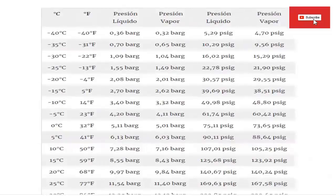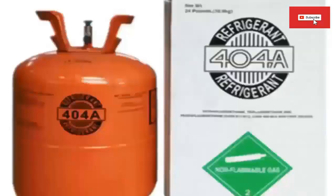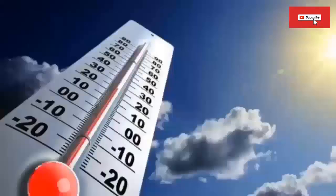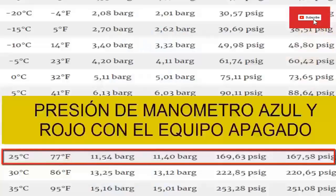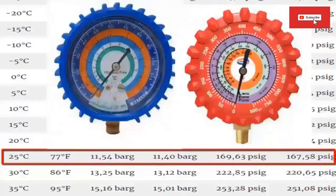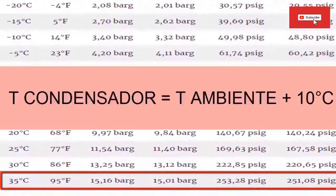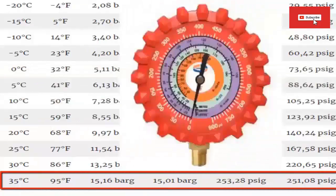In some cases, it is useful to know the pressure of the equipment when it is turned off and the high pressure at the condenser. 1. For an outdoor ambient temperature of 25°C (77°F), the equipment turned off will have a gauge pressure, both high and low, of 11.40 bar, equivalent to 167.58 psi G. 2. With a condenser temperature typically about 10°C above the ambient — so at 35°C (95°F) — the high gauge pressure in the condenser is 15.1 bar, equivalent to 251.8 psi G.